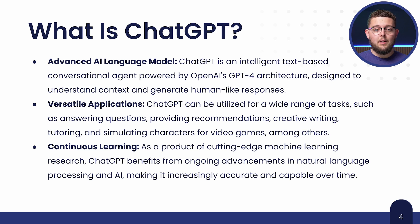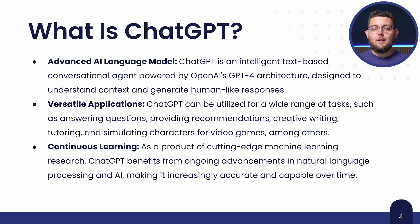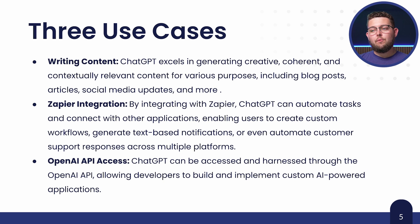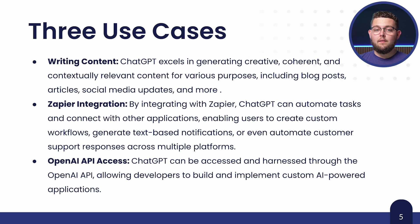ChatGPT is a text-based conversational agent which understands the prompts given and generates responses to those prompts as accurately as possible. One of the cool things about ChatGPT is that it has continuously learning capabilities, which means you can essentially teach it what you need and it can evolve to fit the data you give it. The three use cases we'll cover are: writing content, integrating ChatGPT with Zapier, and using the OpenAI API to create custom applications.